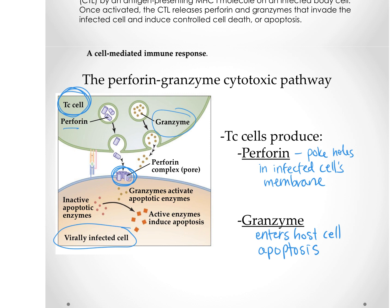That's much better than lysing that virally infected cell, because if you lyse it, there might be viruses being assembled inside that would just get a chance to leave the cell and infect other cells. So you want that cell to die without releasing its contents right away. There are other ways cytotoxic T cells can kill — at least one other pathway — but we think the perforin-granzyme pathway is the most common. We get a more vigorous, better response when those differentiated T helper cells are acting on the cytotoxic T cell.